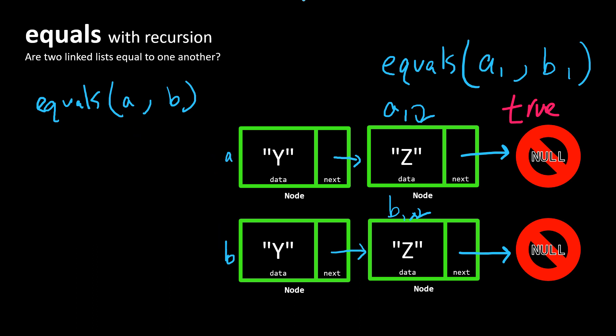So how do we think about whether or not these two lists are equal to one another? Well, first we can compare the data contents of each node. So just like we did before,